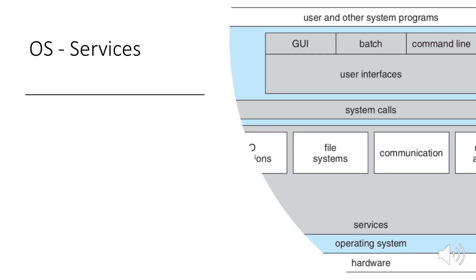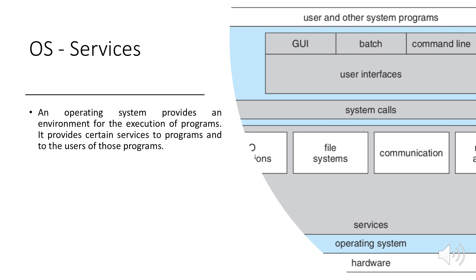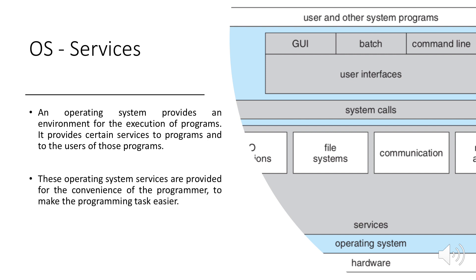An operating system provides an environment for the execution of programs. It provides certain services to programs and to the users of those programs. These operating system services are provided for the convenience of the programmer to make the programming task easier. Operating system services provide the following functions.